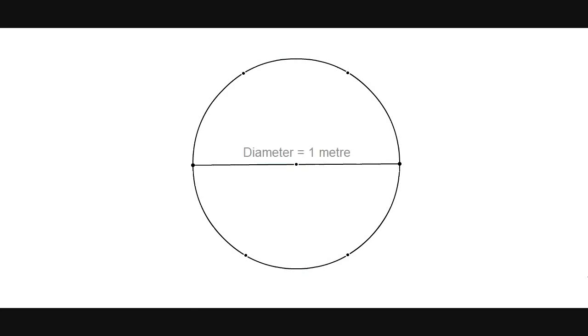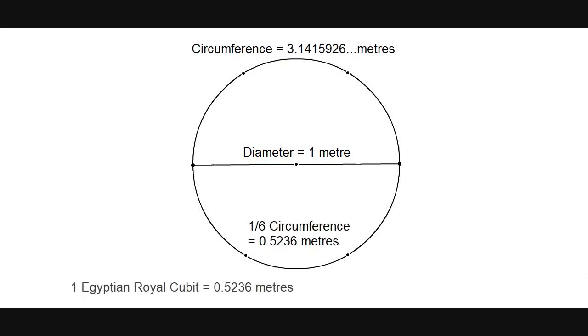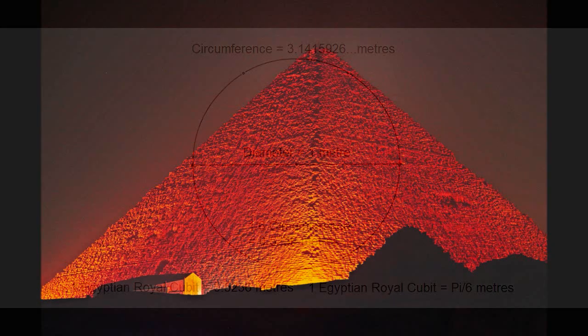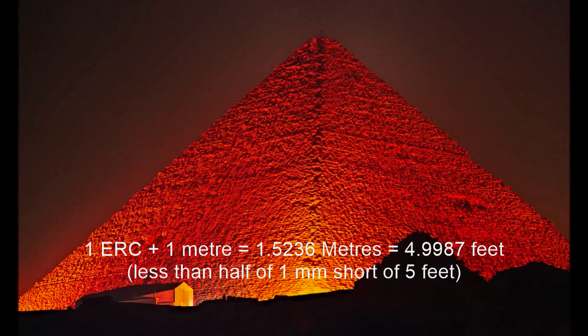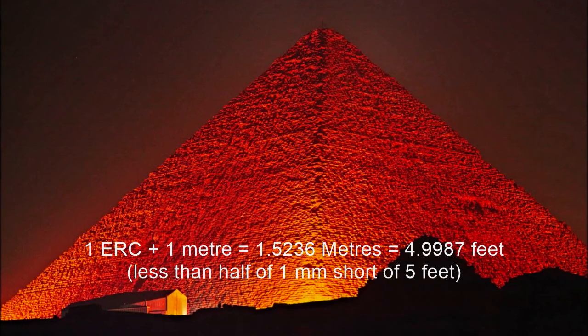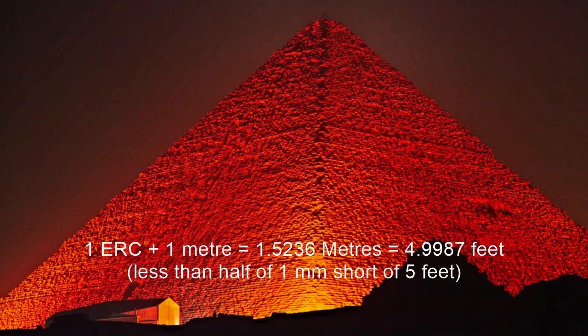By some amazingly improbable coincidence, if you draw a circle with a diameter of one speed of light meter, one-sixth of the circumference is exactly one Egyptian royal cubit. It can also be expressed as pi over six. And here's another seemingly improbable thing: if you add one Egyptian royal cubit and one meter, we have almost exactly five feet. What are the chances of random lengths fitting together like that? Maybe they're not random.